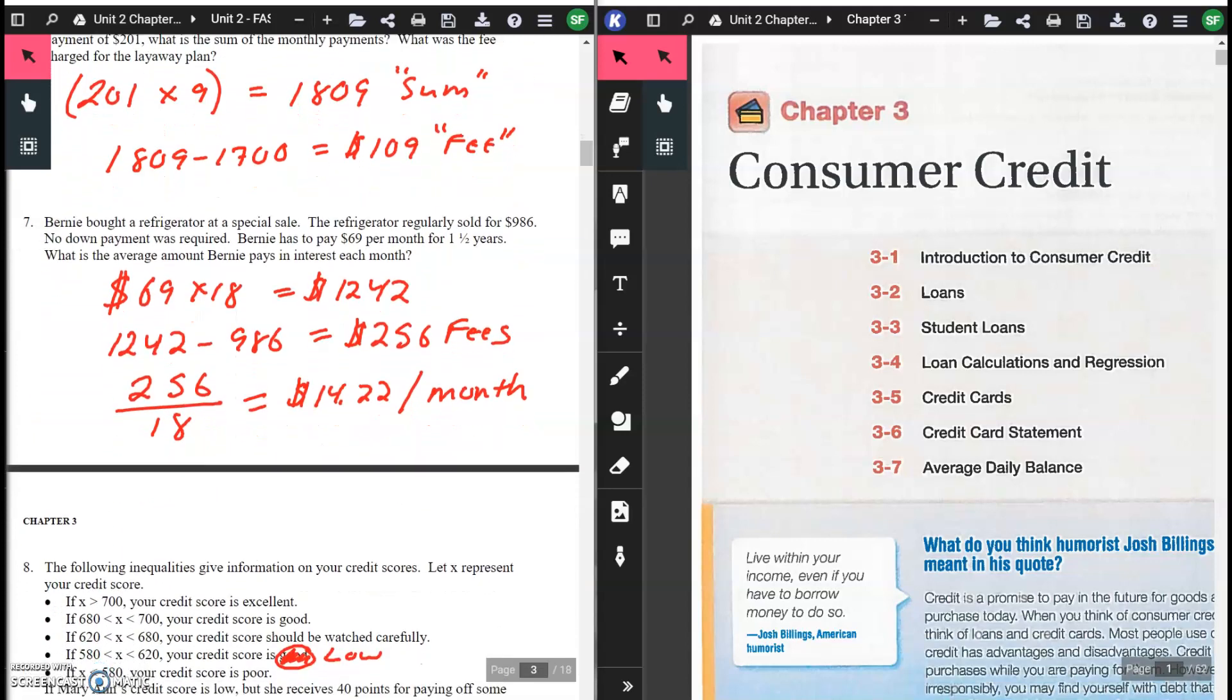Number seven: Bernie bought a refrigerator at a special sale. The refrigerator regularly sold for $986. No down payment was required. Bernie has to pay $69 per month for a year and a half. What is the average amount Bernie pays in interest each month? A year and a half is 12 months plus six months, that's 18 months. $69 per month times 18 months gives you $1,242. That's how much you're paying in the end. $1,242 minus what the refrigerator sold for, $986, gives you $256 difference. That $256 was the amount total for fees.